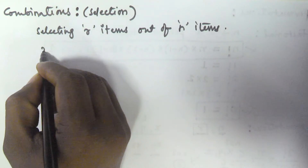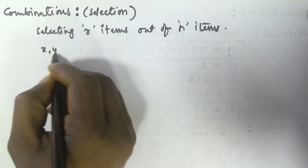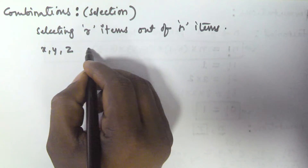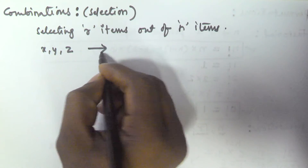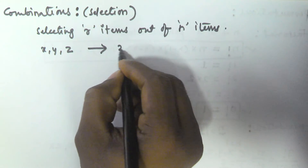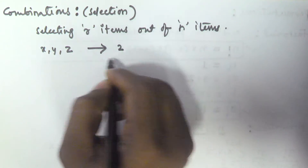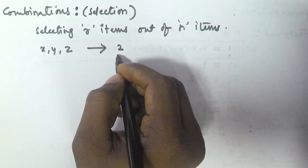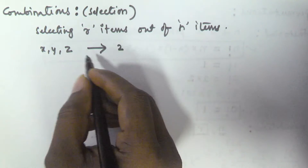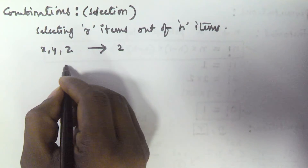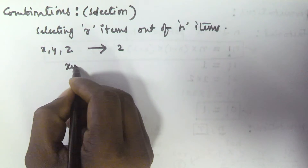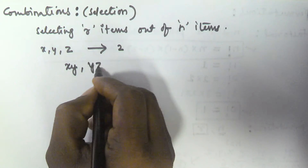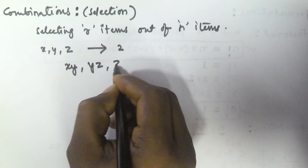For example, we have three items x, y, z, out of which we have to select two items. So the two items may be x,y or y,z or z,x.